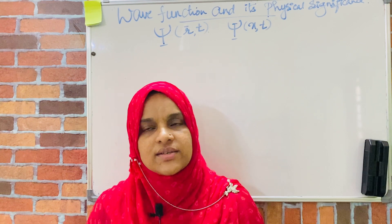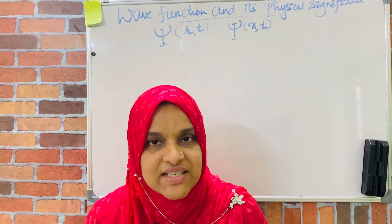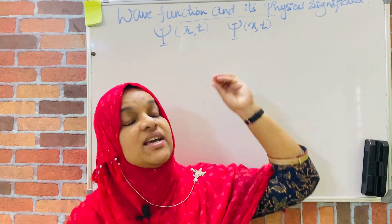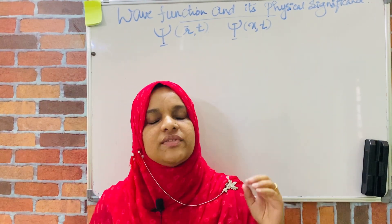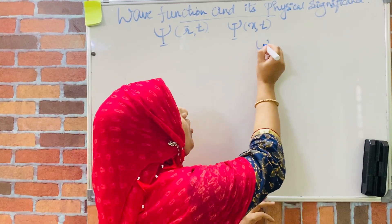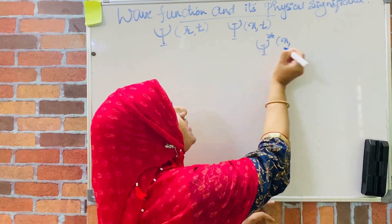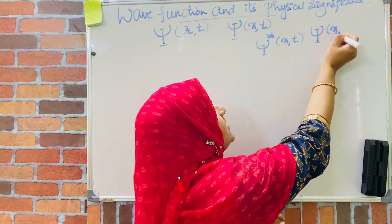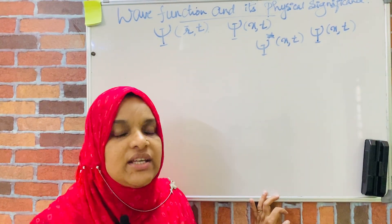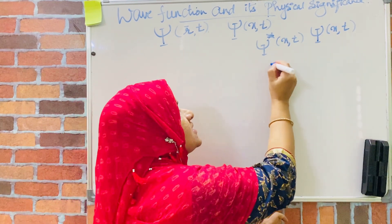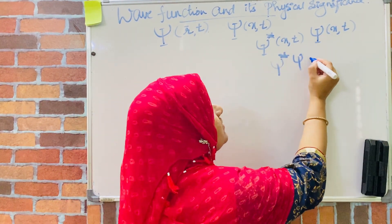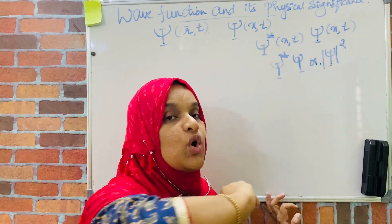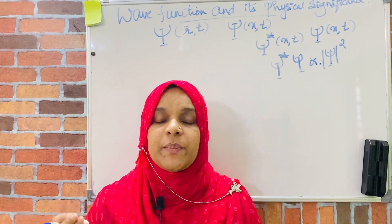It is not measurable. The thing which has physical significance is the square of this wave function. If psi is a complex function, psi star will represent the complex conjugate of psi. So psi star times psi will be equal to psi squared, and this represents the probability density, or the probability of finding a particle per unit volume.